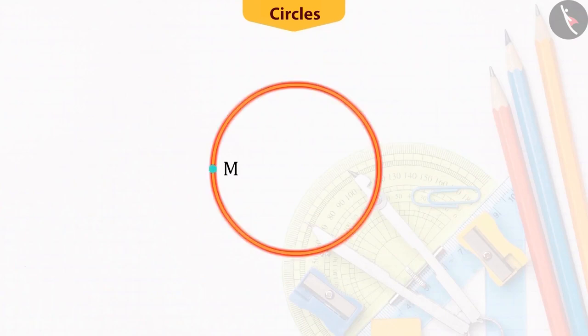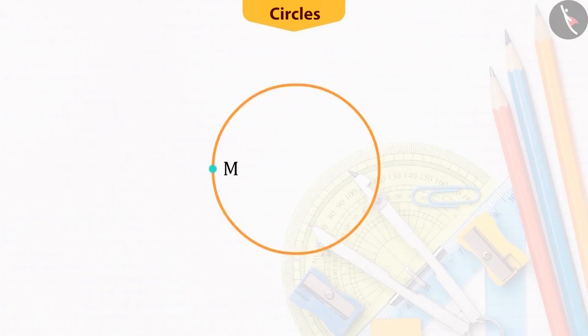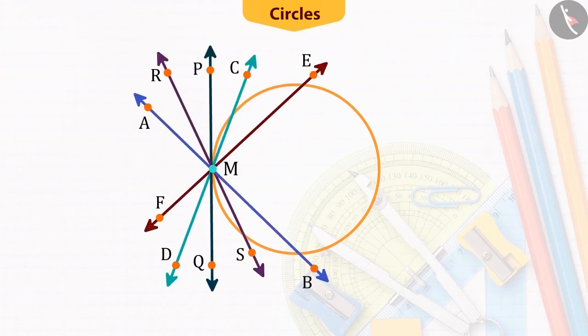Can you draw any other line on this circle passing through the point M? Let's give it a try. From the point M, let's draw some lines on the circle.